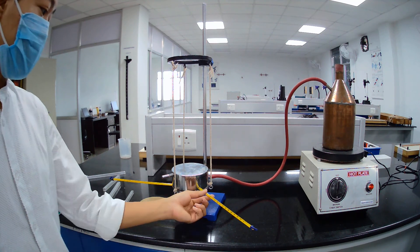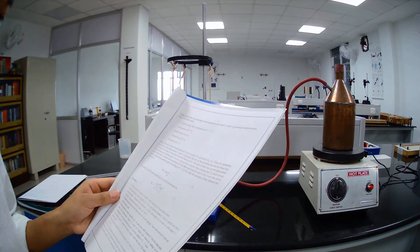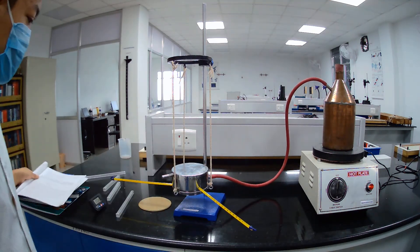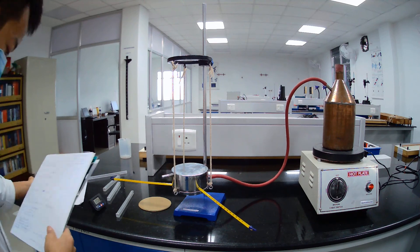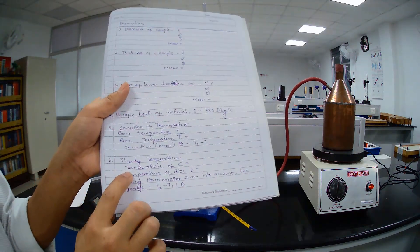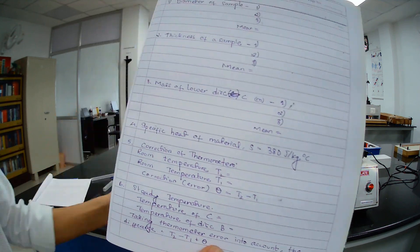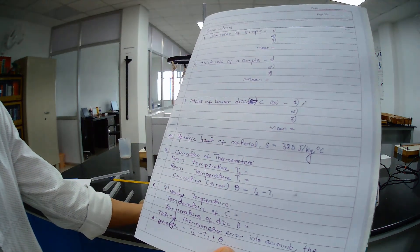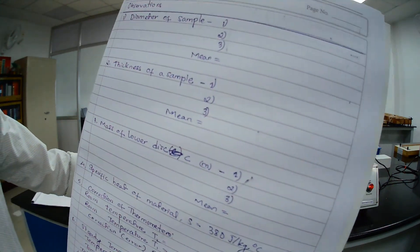After T1 and T2 will stop increasing, note that temperature here, steady temperature of C, this is C, and temperature of disk B, this upper one.